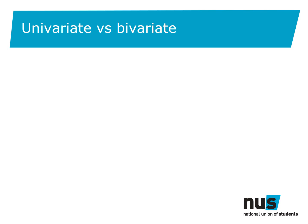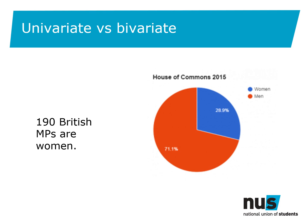So univariate analysis simply states a fact, such as 190 British MPs are women. Bivariate analysis gives you the context to make your figure meaningful — showing a chart comparing the number of female and male MPs illustrates the difference, especially when it's widely known that women comprise just over 50% of the population. Similarly for the NSS, your institution, department or course's satisfaction score becomes much more useful when compared to a score from another institution, department, course or the UK average.